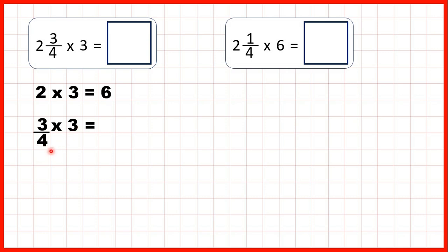We'll see why we have to do that in a moment. But 3 times 3 is 9, and the denominator stays the same, so we have 9 over 4. But that's an improper fraction — we have a numerator which is larger than the denominator.